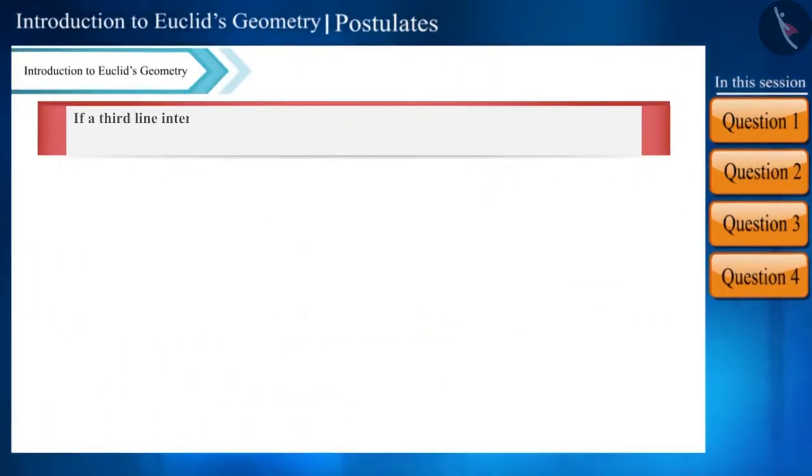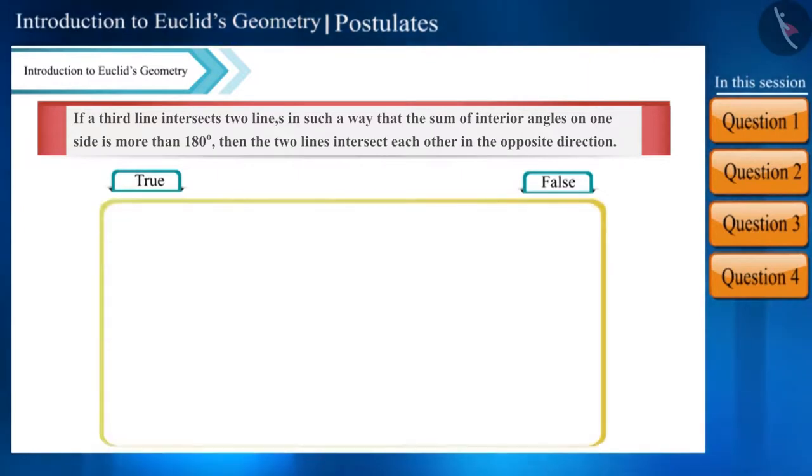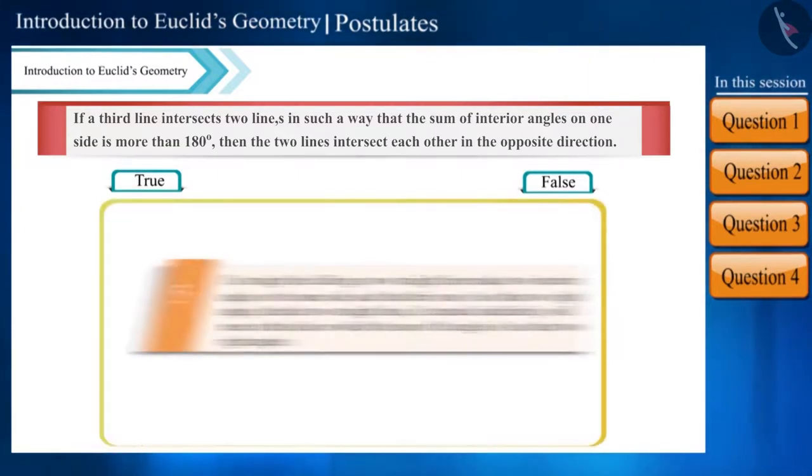If a third line intersects two lines in such a way that the sum of interior angles on one side is more than 180 degrees, then the two lines intersect each other in the opposite direction. Is the given statement true or false?